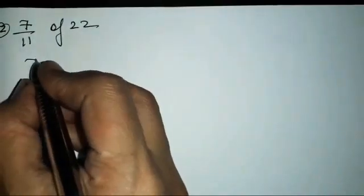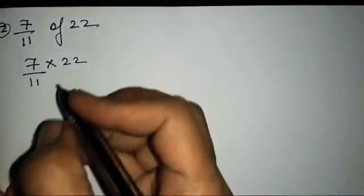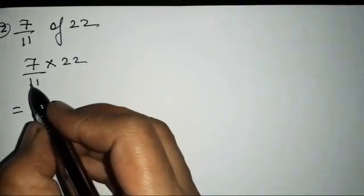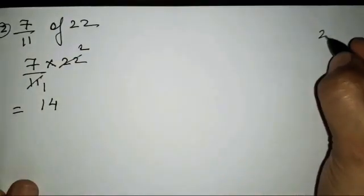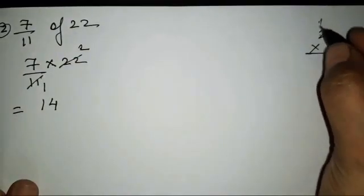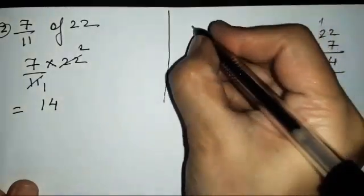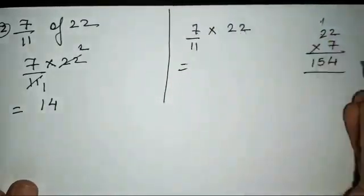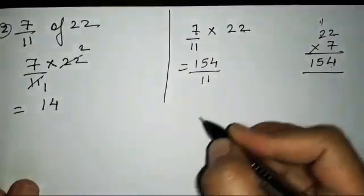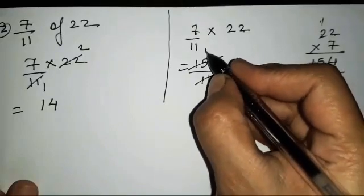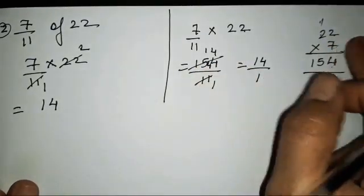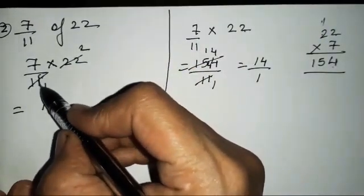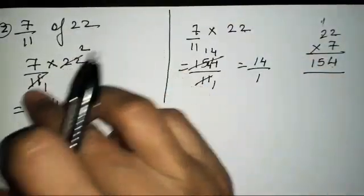The second sum is 7/11 of 22, meaning 7/11 × 22. First, divide 22 by 11 to get 2, then multiply by 7 to get 14. Alternatively, 7×22 = 154/11, and dividing 154 by 11 also gives 14. The cross-multiplication shortcut is easier: 11 and 22 cancel to give 2, then 7×2 = 14.